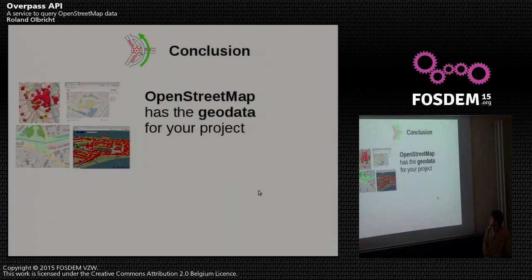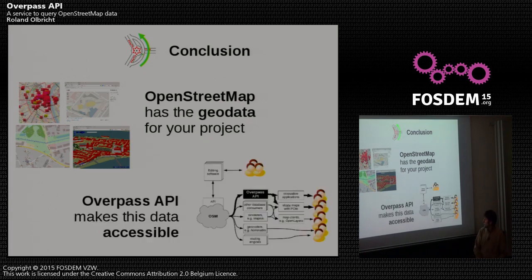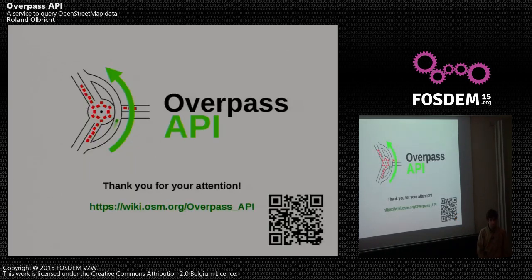To give a conclusion: OpenStreetMap often has the geodata for your project. Whenever you need general purpose geodata, it's very likely you would get good enough geodata from OpenStreetMap. And the Overpass API makes this data really accessible to the level that you only need a single page or a single tool. You don't need to worry about how to get updates - you just fetch the dataset you need. Thank you for your attention, and I'm ready for questions.